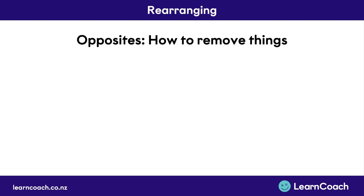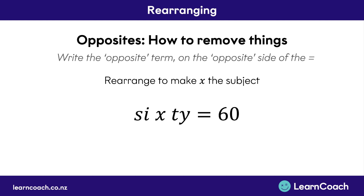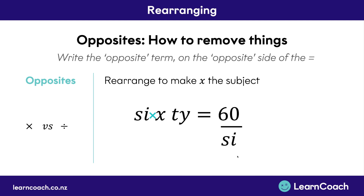The first key idea you need to know is opposites — this is how we remove everything. The opposites mean we write the opposite term on the opposite side of the equals sign. So when we look at this X, it's connected to SI by a multiplication sign. If you ever see two letters next to each other, they are connected with a multiplication sign. The opposite of multiplication is division. So we can do the opposite of times SI, which is divided by SI, on the other side of the equals sign. Once you've added this opposite SI on the right-hand side, you can get rid of the SI on the left-hand side.